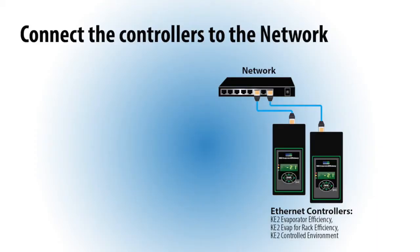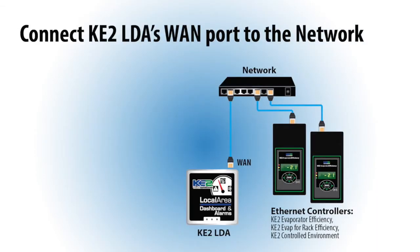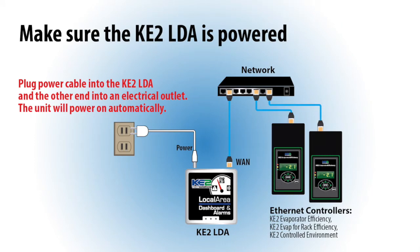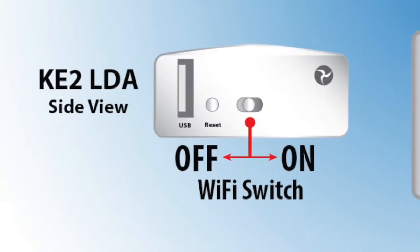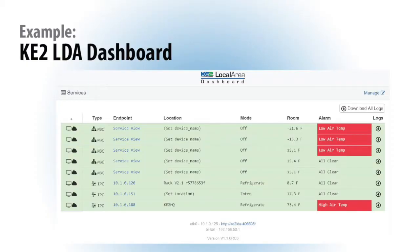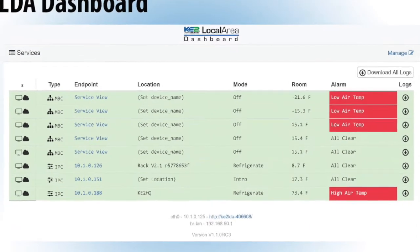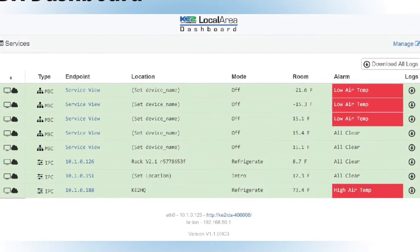First, you'll need to connect the controllers to the customer network. Then connect from the Key2 LDA's WAN port to the customer network. Make sure the Key2 LDA is plugged in and the wireless switch is moved to ON. The Key2 LDA will automatically find the Key2 Therm controllers connected to the local network and display them on the dashboard.